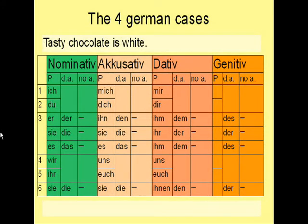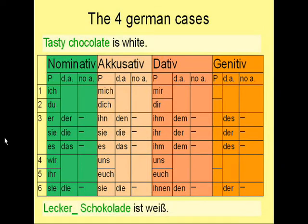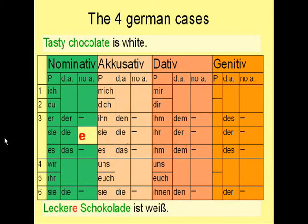Now let's try: 'Tasty chocolate is white.' Again, the chocolate is the subject of the sentence, so it's in the nominative case. But this time it's the adjective 'tasty' — Lecker — which has to be declined. The ending is again E, because the chocolate is still in the nominative case and still feminine. So the sentence reads correctly: Leckere Schokolade ist Weiß.